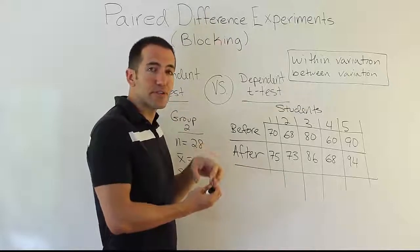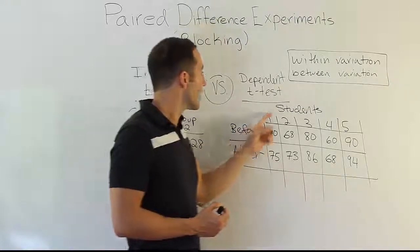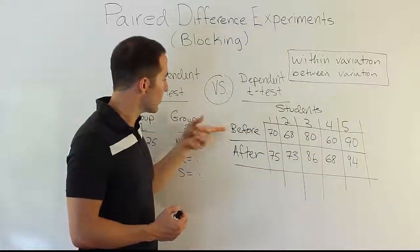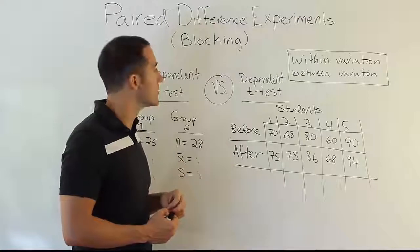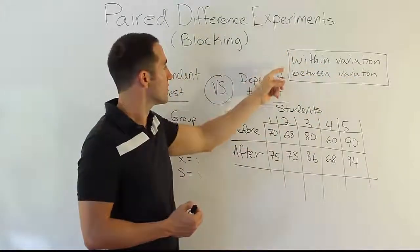Blocking means you're going to do some strategy to eliminate the differences you're not interested in. Like I don't care about the differences among the students. So I'm only going to be interested in the differences between before and after test scores. Alright, and this brings us to this little box I wrote here, this within variation versus between variation.